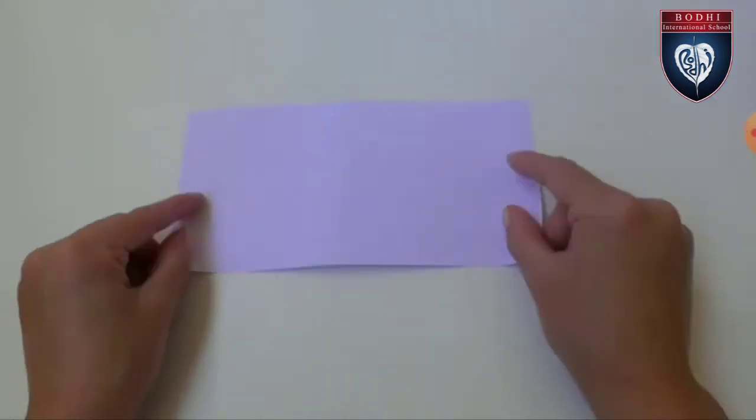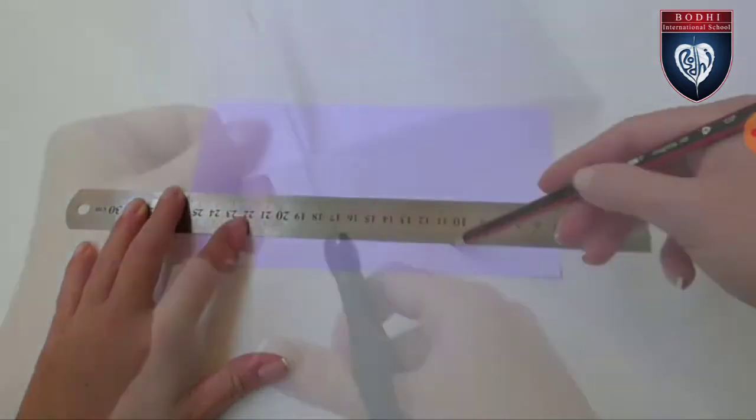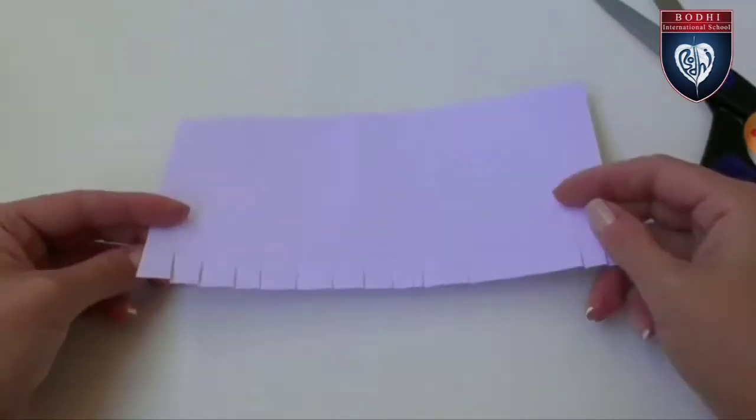And now take a broad sheet of A4 sheet and draw a straight line away from its border and cut.